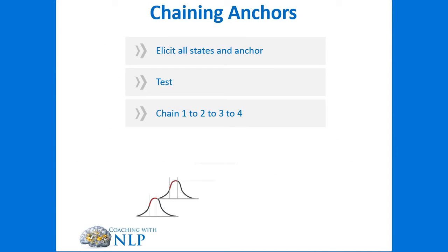Essentially each state peaks by itself — none of the states are peaking at the same time. As the first peaks you fire the second and release the first; as the second peaks you fire the third and release the second; as the third peaks you fire the fourth and release the third. Here we have four anchors in the chain. Typically four is the number we work with — I've done chains of three and chains of five, but most often four is sufficient. If you have too many anchors the chain can fall over or break and not carry through. So four states are typically enough.